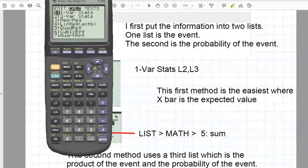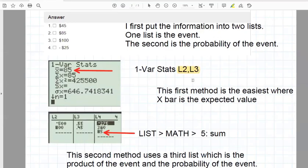So select one variable statistics and then input L2, L3, the two lists that had the events and the probability of the events. And with that, when you press enter, we get this readout, one variable statistics. And you'll notice the very first entry under one variable statistics is the sample average, the sample mean, which is 85, which tells us that the expected value on average, this person is going to win on average $85 every night that he plays this, even on the nights that he loses, where he loses $500.